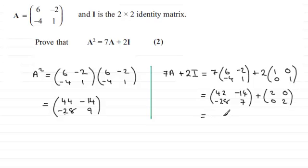When adding these two matrices together, 42 + 2, -14 + 0, and so on, we end up with [44, -14; -28, 9]. You can see they're both the same. Therefore, A² does in fact equal 7A + 2I.